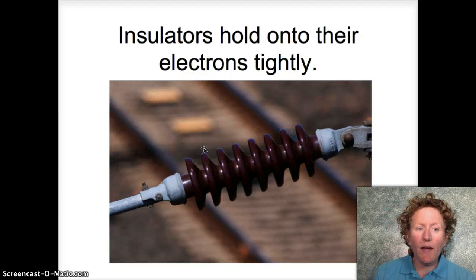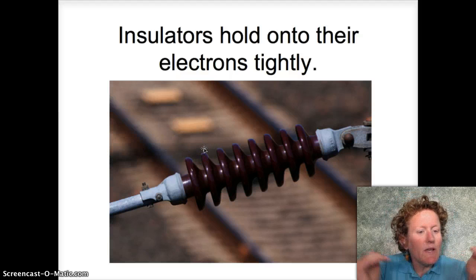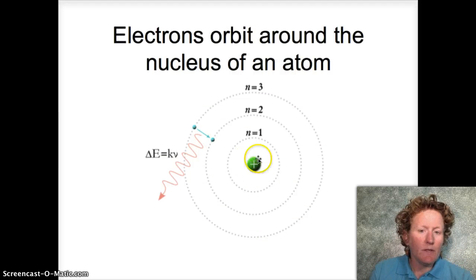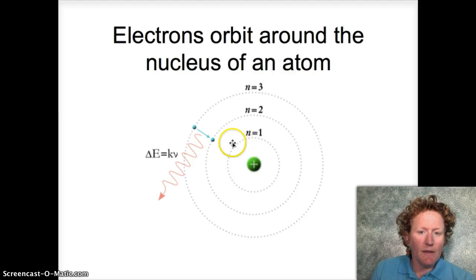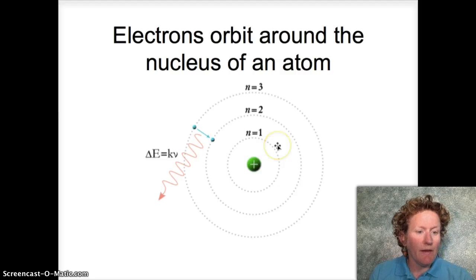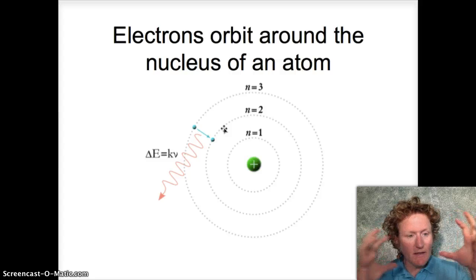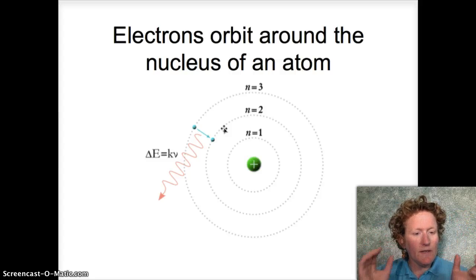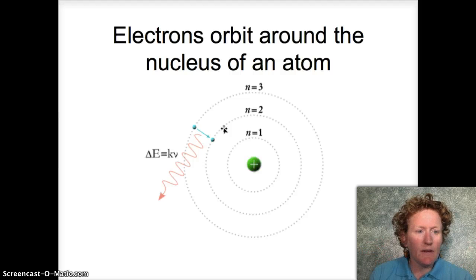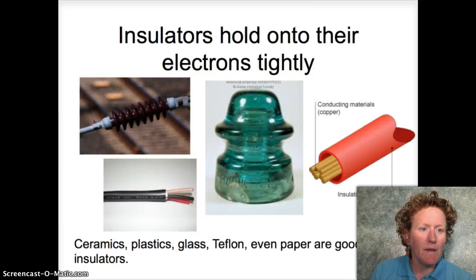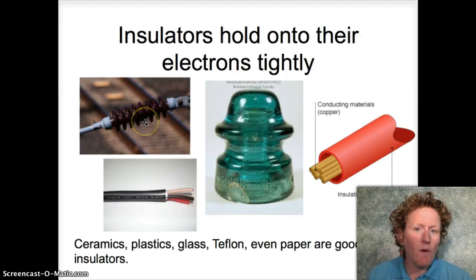Insulators, on the other hand, hold on to their electrons tightly. They keep their electrons close and don't want to let them go. Atoms that like to hold on to their electrons keep them exactly in those levels — orderly and tidy, exactly where they're supposed to be. Those are insulators. The ones that are just like 'whatever, electrons go wherever you want' — those are conductors.